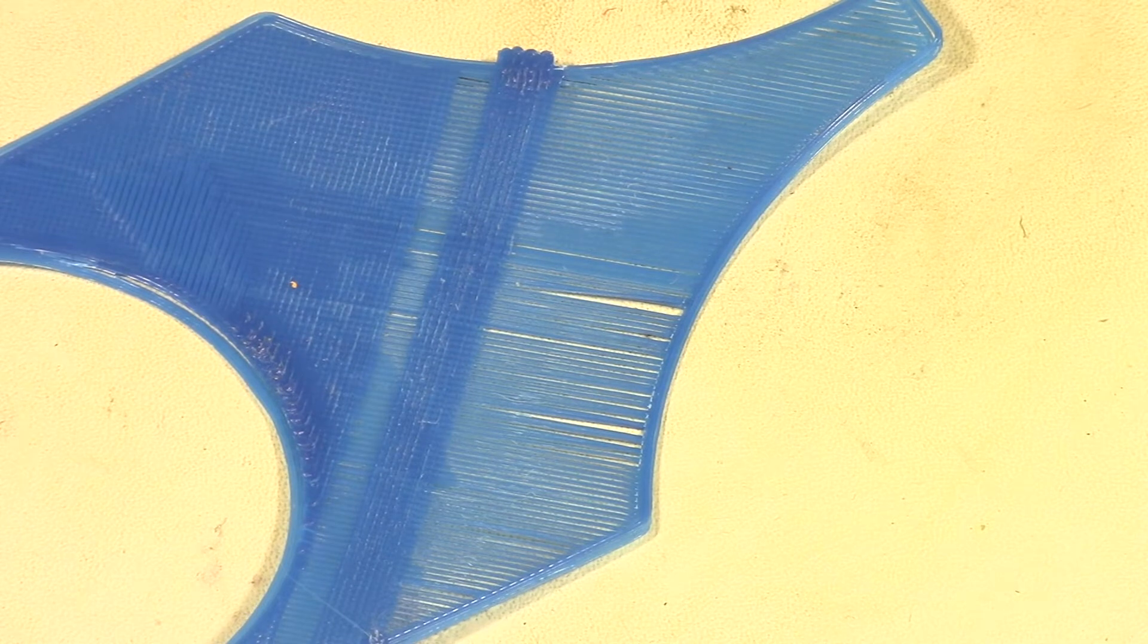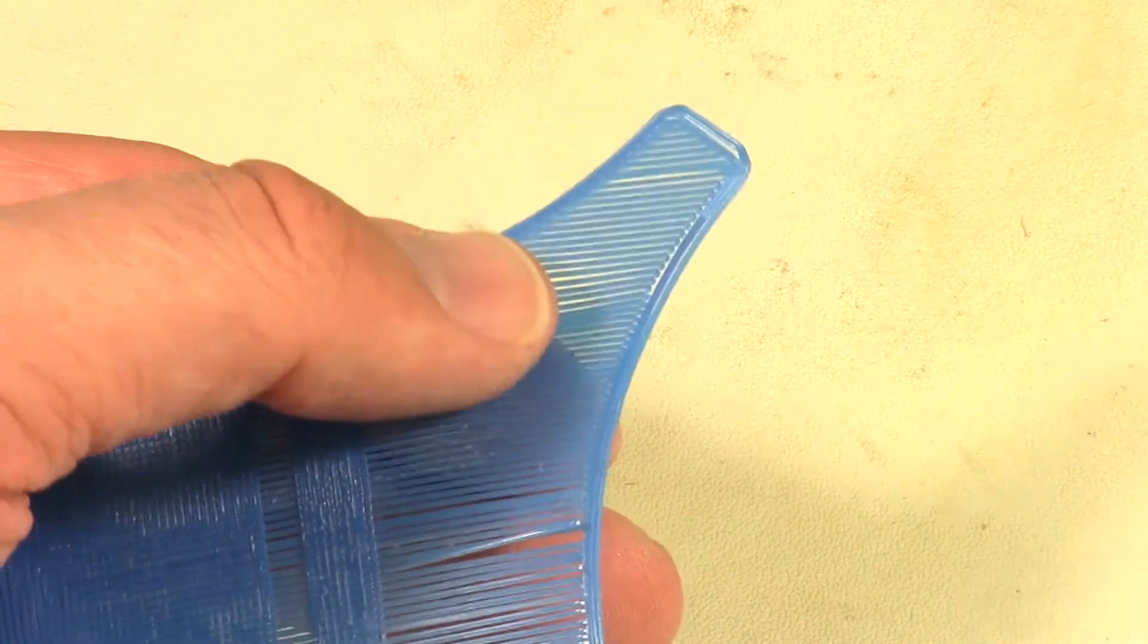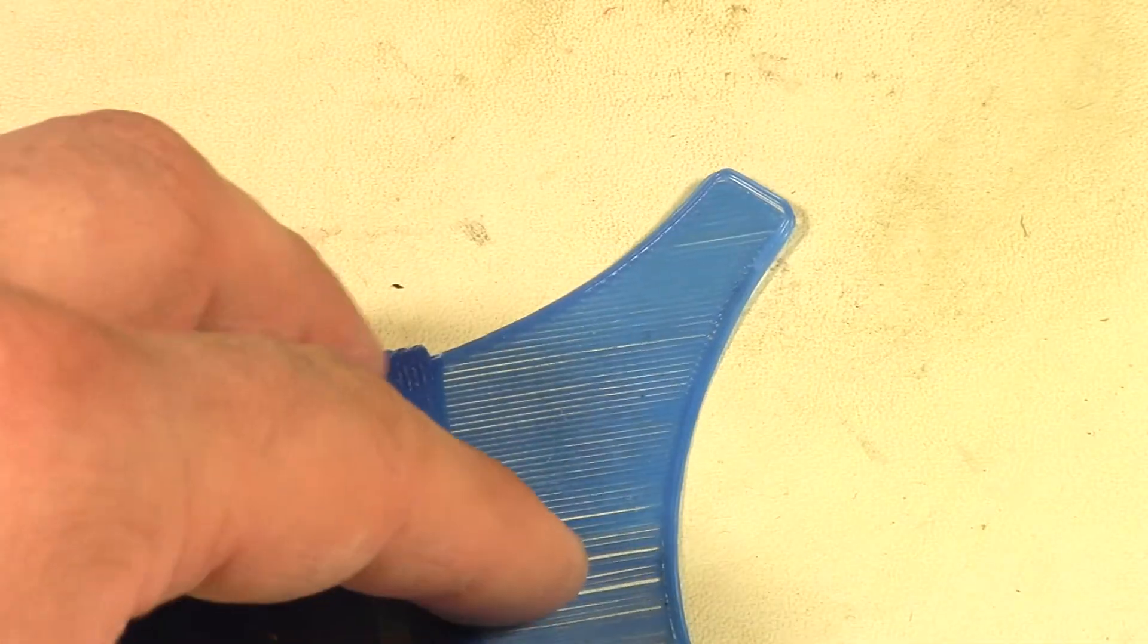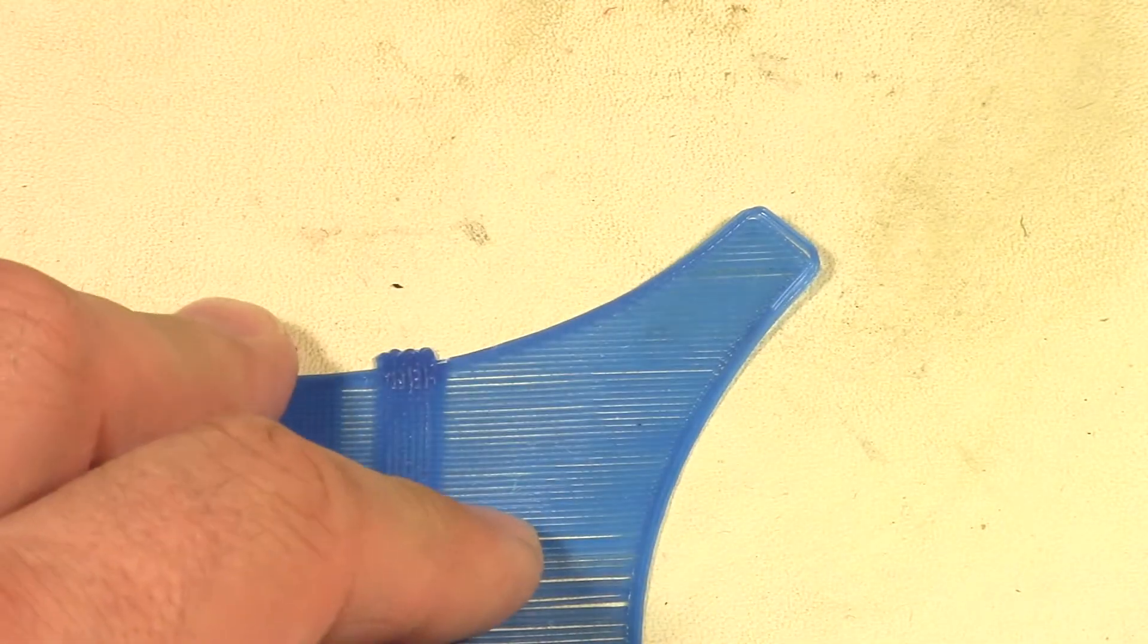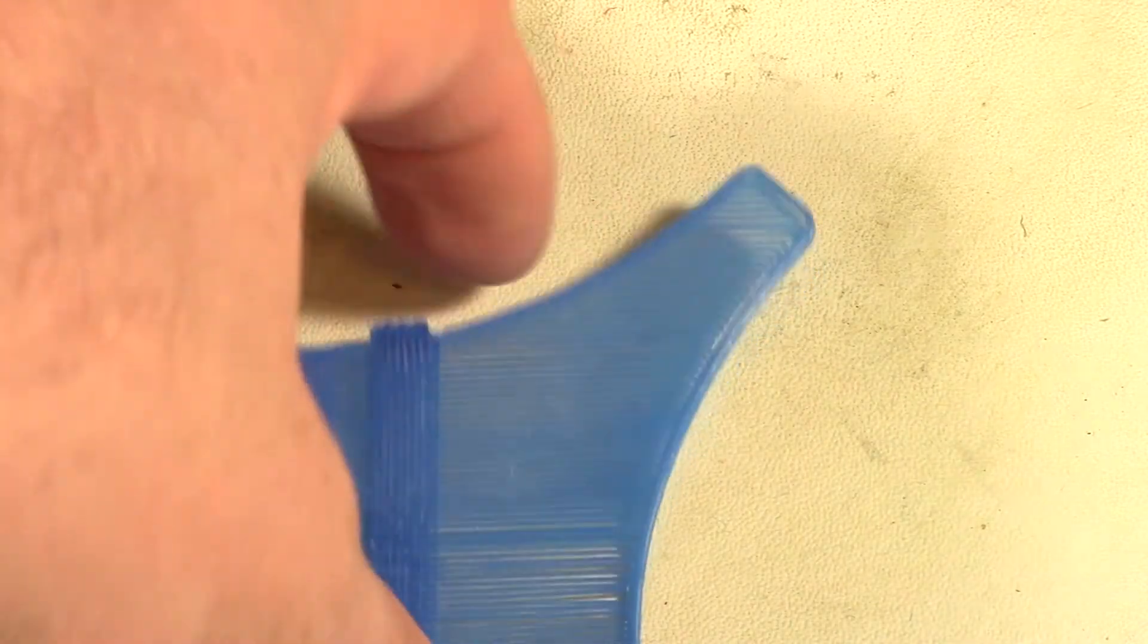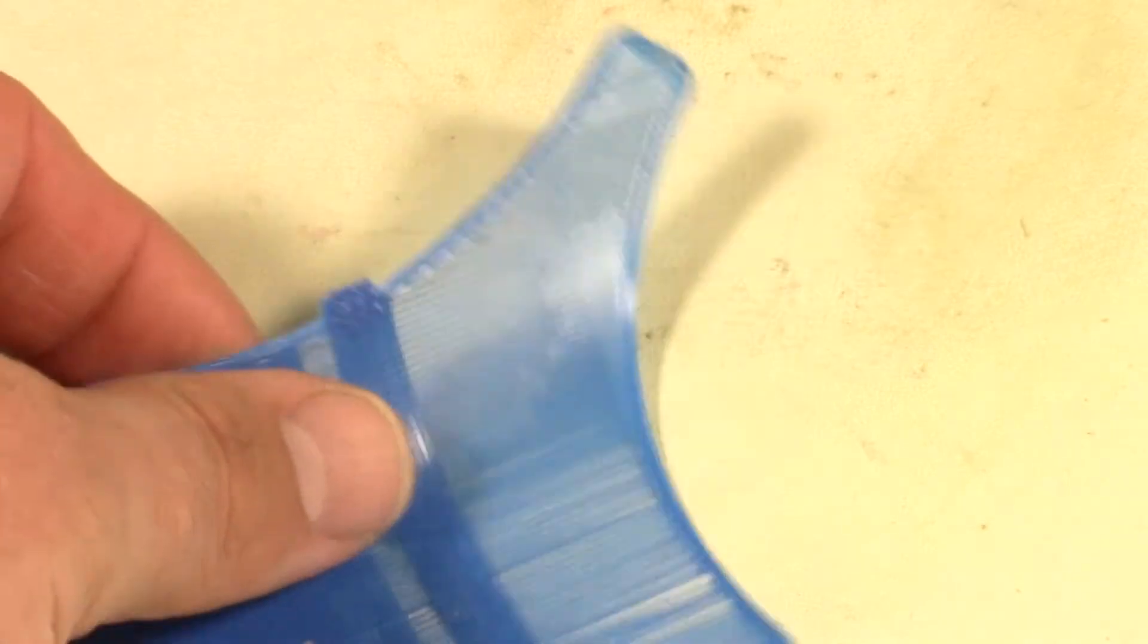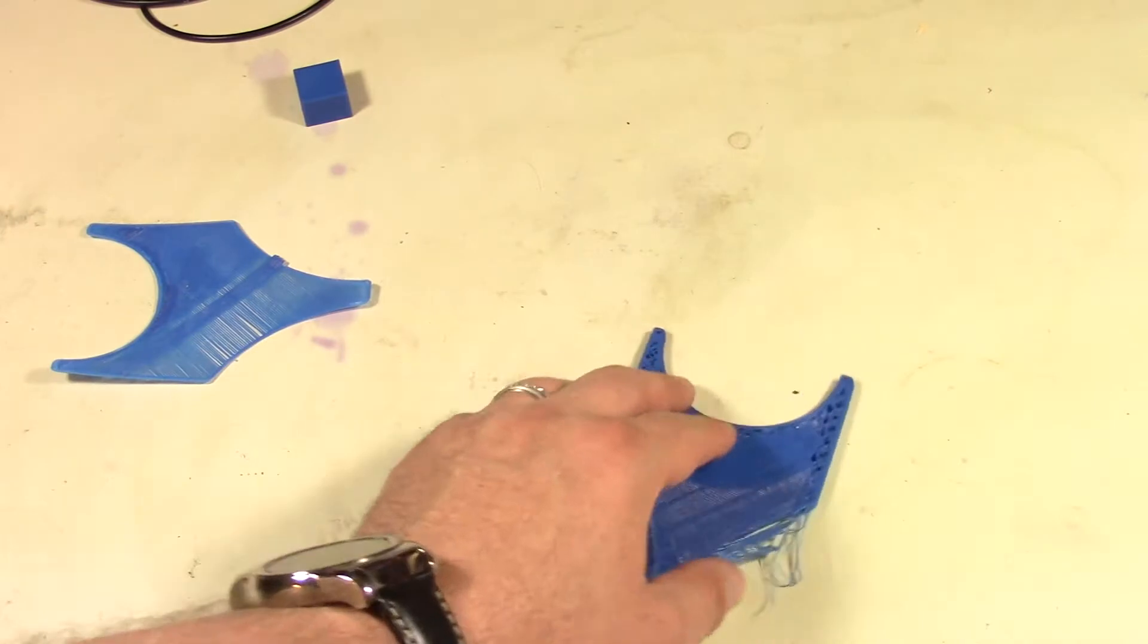Those are kind of the main ones. Like I said, for me, that's what fixed it for me—was slowing it down helped. Heating it up actually didn't help for me, it actually just caused more oozing to happen. So slowing down the infill speed was actually what did it for me and actually helped it on future prints. So that's one I wanted to show you.